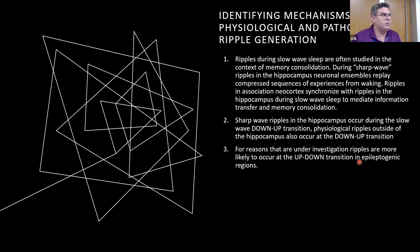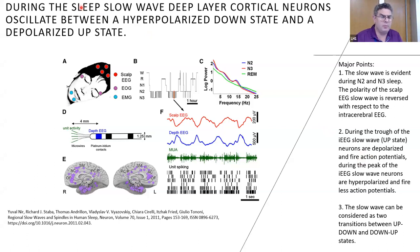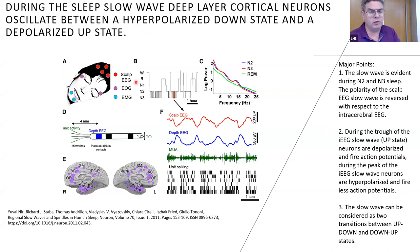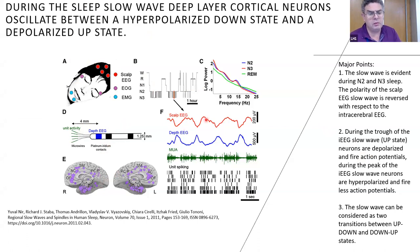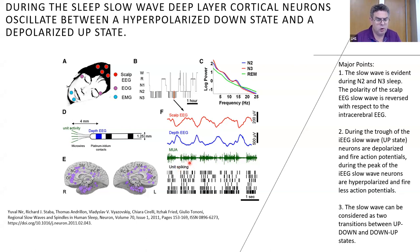Differentiating physiologic from pathologic ripples based on slow-wave excitability phase is difficult due to much overlap. To study these differences, data recorded from six patients at UCLA obtained by Dr. Yuval Nier of Tel Aviv University were examined. These patients underwent sleep studies and were implanted with a Behnke-Fried micromacroelectrode. Panel F shows a segment of slow-wave sleep where the scalp EEG is a mirror image of the depth EEG. During the upward portion of the scalp EEG, unit activity — neuronal spiking — is maximal, called the up state.